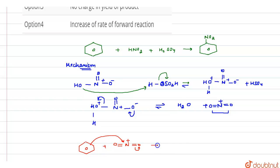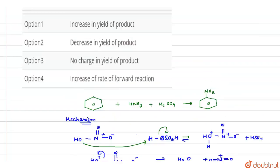So due to this, formation of nitrobenzene takes place. And in the question we are asked about addition of KHSO4.